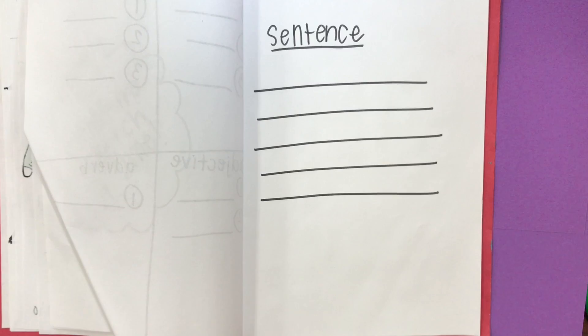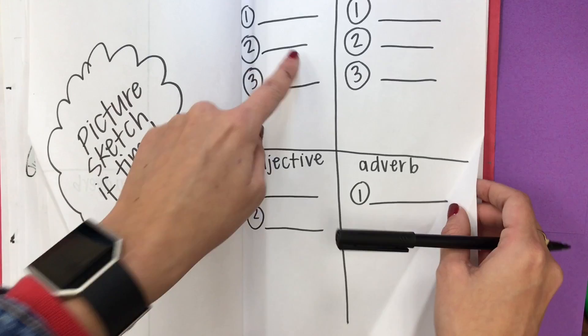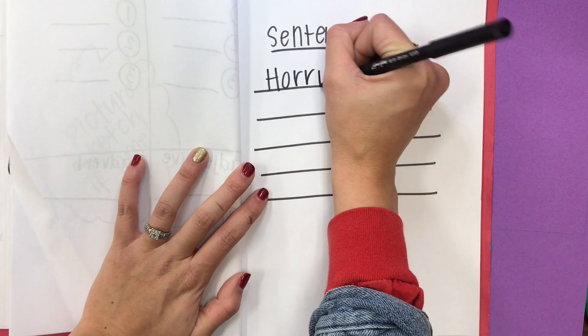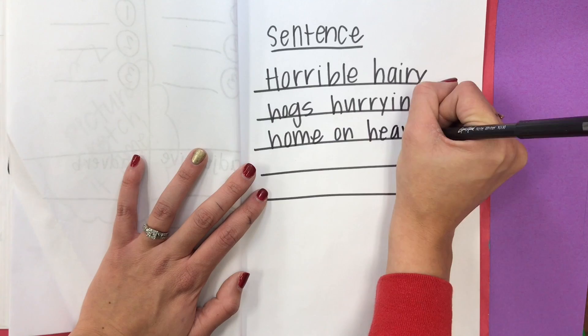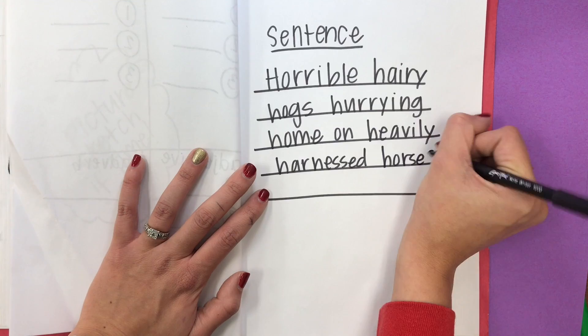On the next page, you're going to use all of that brainstorming to write a sentence. You might write: 'Horrible, hairy hogs' — those are two adjectives and a noun — 'hurrying home heavily on harnessed horses.' Now, you'll notice I have to use a word that doesn't begin with H. Sometimes you'll have to do that because some words just don't lend themselves. It's okay — you can use one or two.